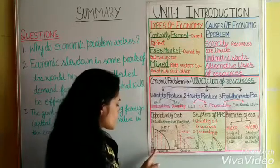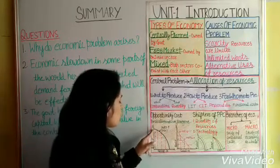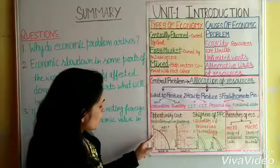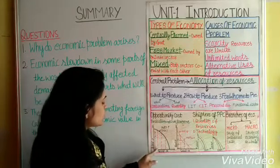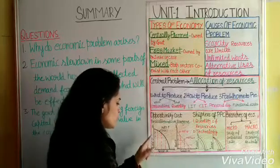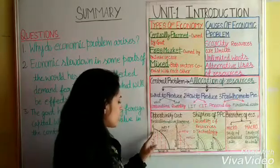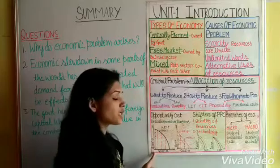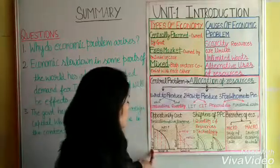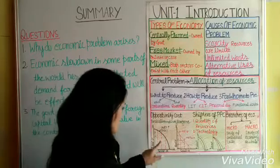As the economy produces additional units of X, it has to sacrifice more and more of Y. Every additional unit of X requires an increasing sacrifice of Y, because of limited resources. This is why the PPC is concave to the origin when MRT is increasing.